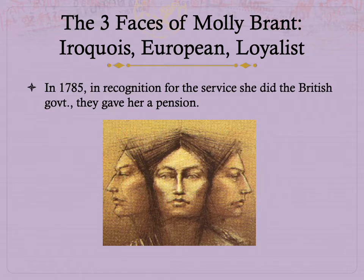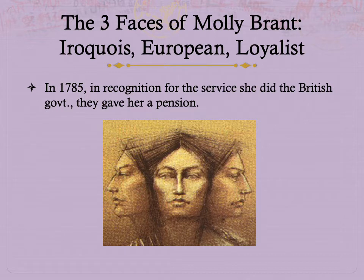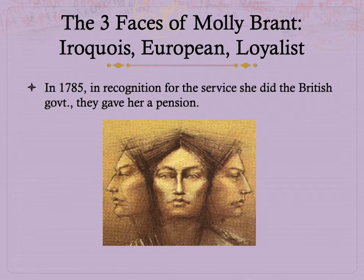This drawing illustrates what's called the three faces of Molly Brandt. She was an Iroquois woman; she was a European woman in that she was married to a European man and was a very good English speaker; and she was a loyalist — loyal to the British government. Like lots of us, she was different people in different times to different people. In 1785, when she retired at the end of the war, in recognition for her services to the British government, they gave her a retirement pension — which suggests how truly seriously they took her contribution to the war effort.